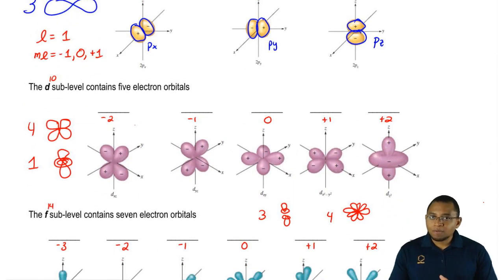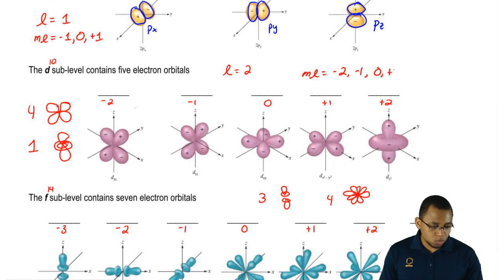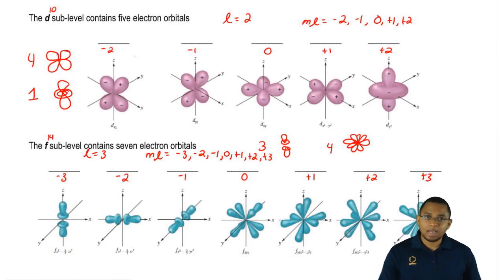So you can see how the relationships work out. If it's D, L equals two, and remember, M sub-L is just the range of L. So it would be minus two, minus one, zero, plus one, plus two. Then finally, if it's F, L equals three, and then the range is negative three to positive three. And that range, each of those numbers represents an orbital for that sub-level. That's how everything is going to fit together.